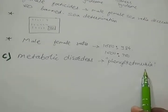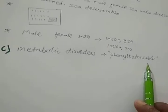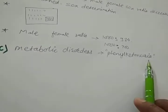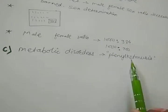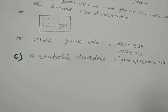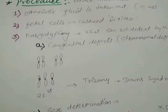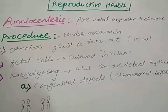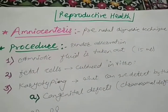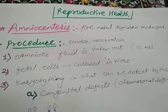In metabolic disorders, an enzyme which normally produces a certain protein does not function properly here. By detecting the chromosomes, we can detect such metabolic disorders as well. So all these disorders are detected with the help of karyotyping, and this is the amniocentesis procedure. The remaining chapter we will see in the next video. Thank you.